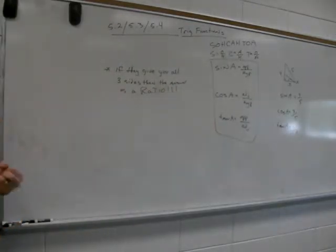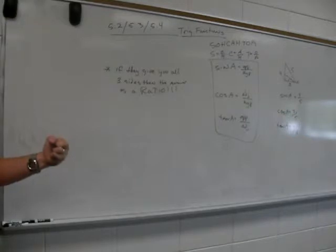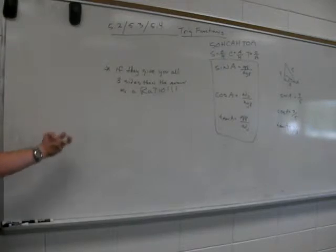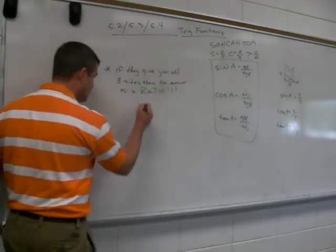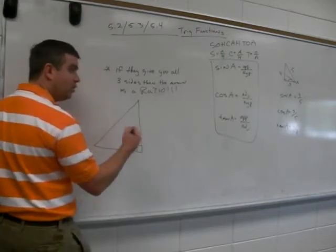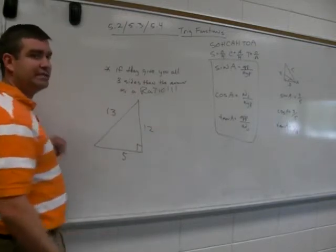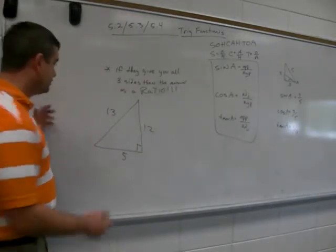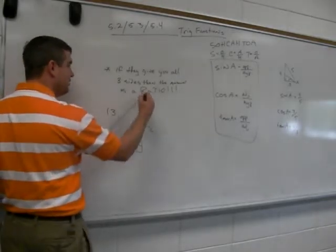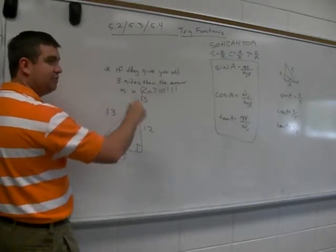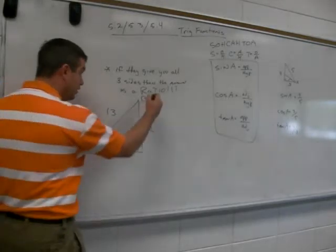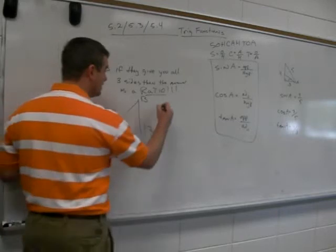If the problem gives you all three sides of the triangle, then the answer is a ratio. And this will make more sense in a little bit when we do some that aren't a ratio. But I want you to have that written down in your notes and understand it. This is a note card. If the problem gives you all three sides of the triangle, there's no unknowns.